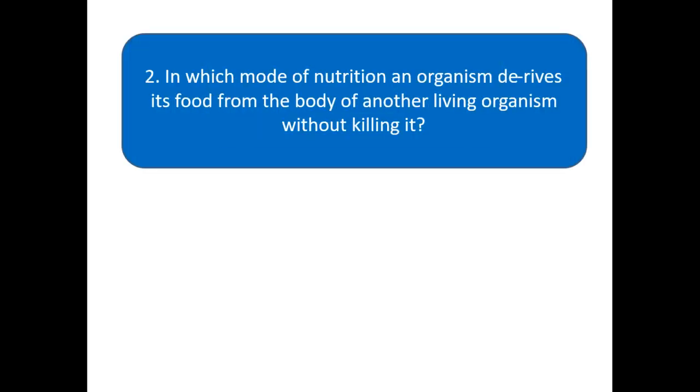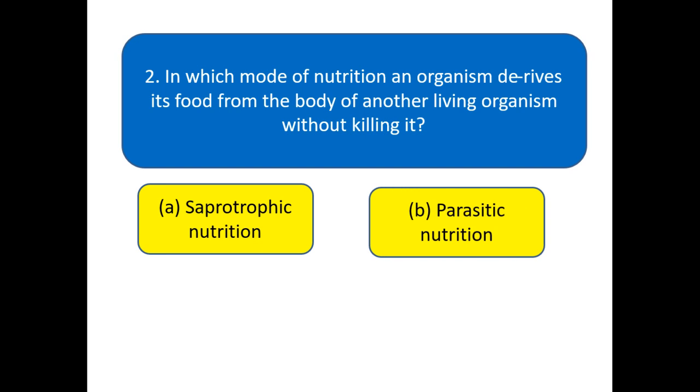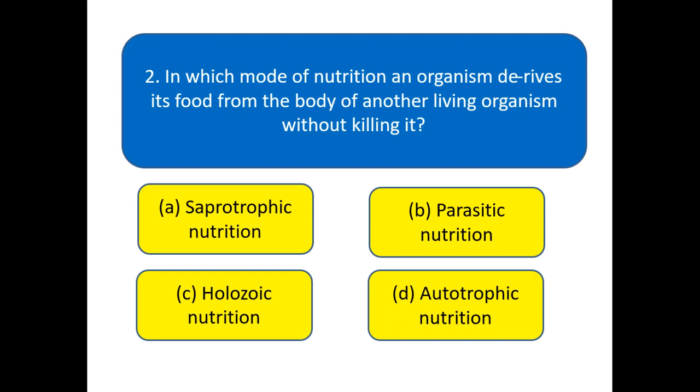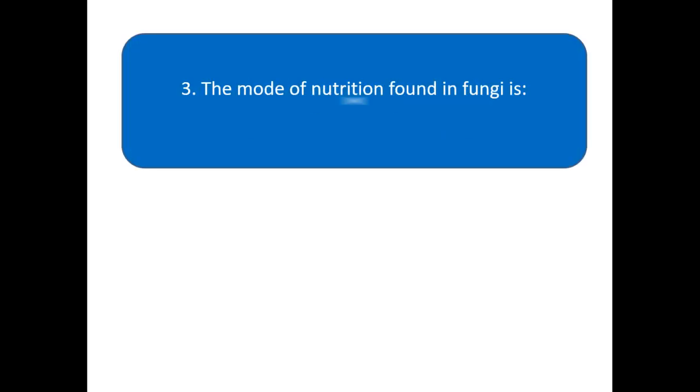Here we go for the next question. In which mode of nutrition does an organism derive its food from the body of another living organism without killing it? Your options are: saprotrophic nutrition, parasitic nutrition, holozoic nutrition, autotrophic nutrition. Choose the right option for this question and write it down.